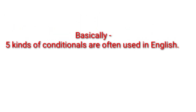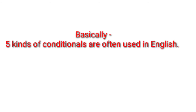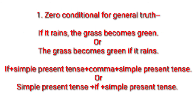Basically five kinds of conditionals are used often in English. The first is the zero conditional. Example: 'If it rains, the grass becomes green' or 'The grass becomes green if it rains.' Structure: if + simple present tense + comma + simple present tense, or simple present tense + if + simple present tense. If 'if' starts the sentence, put a comma after the subordinate clause. If 'if' is between the two clauses, no comma is needed.